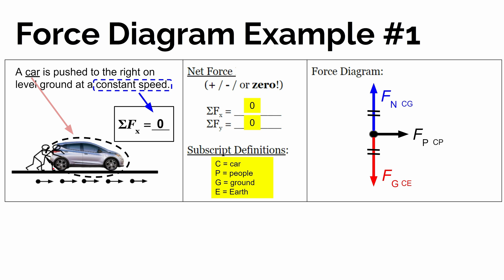So if it's moving to the right, friction would be back to the left. So we're going to have another arrow drawn from the center of the dot to the left, the same size as the pushing force, to show that these two things balance.